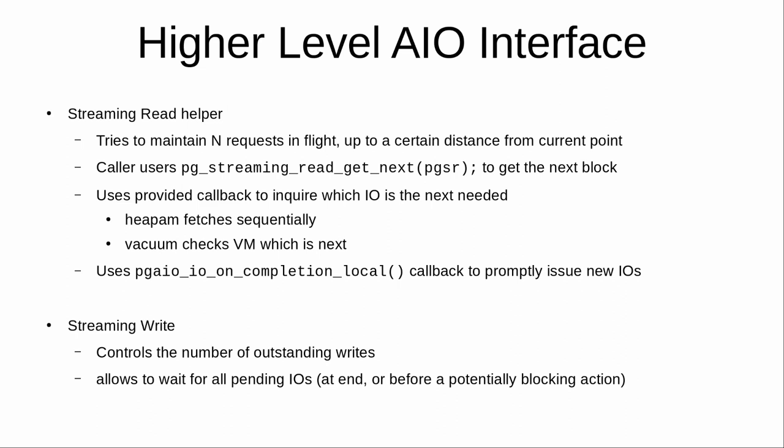That streaming read helper internally uses the local completion handler to get called back whenever an IO finishes, and from inside that callback it says: my read-ahead window is this large, but I haven't issued that many requests yet, so now I can issue more. Similarly, there's a streaming write helper that maintains a queue of outstanding writes and makes sure to issue them while not having too many in parallel, to avoid overloading the system. It's likely that different parts of the system would be configured with different queue depths — for example, vacuum could have a low queue depth for data file writes so it's not overly impactful, but can still make good progress when there isn't much concurrent activity.